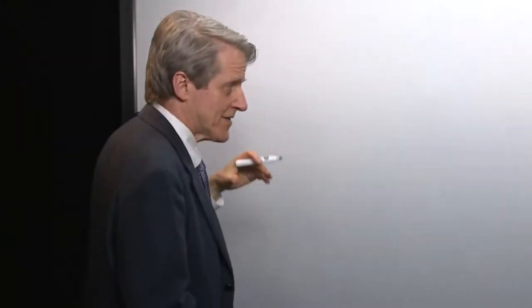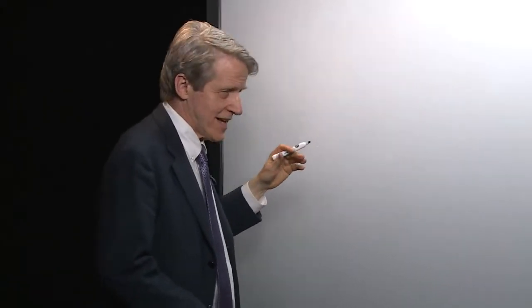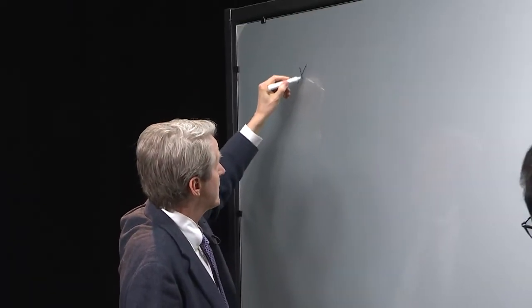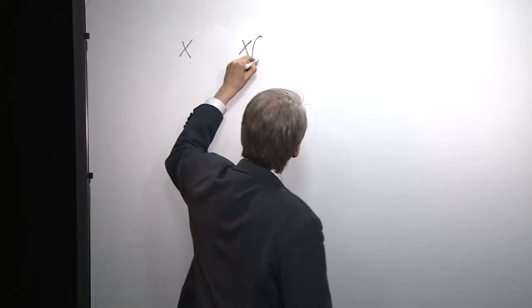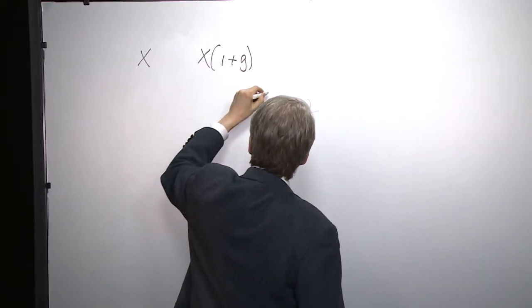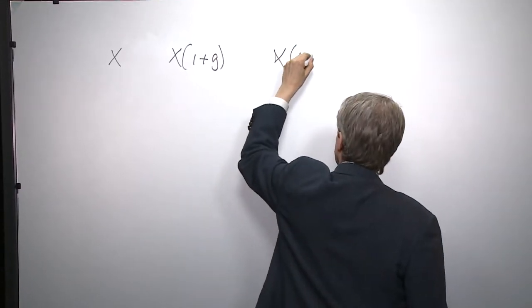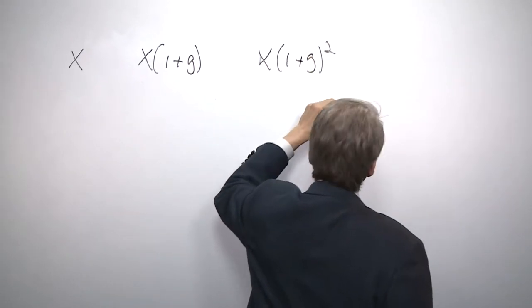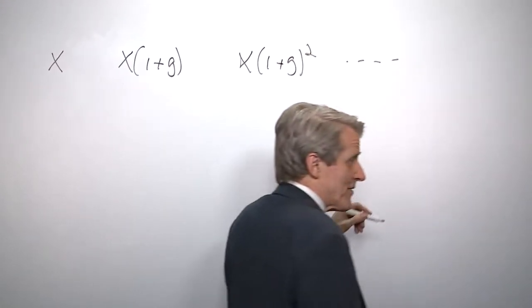Myron Gordon, a half century ago, gave a formula for the present value of a growing quantity. Suppose we have an asset — let's call it land — that is producing revenue for you every year, and the revenue is growing in value. So it produces x the first year, then x times (1 plus the growth rate) the next year, then x times (1 plus the growth rate) squared the next year, and then it does that forever.